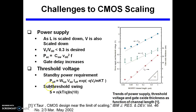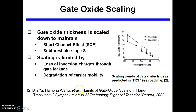Another important major problem is sub-threshold swing. We are required to maintain sub-threshold swing near 80 mV. As we are going to scale the transistor, we are required to scale the gate oxide also, and for gate oxide scaling there are some guidelines.